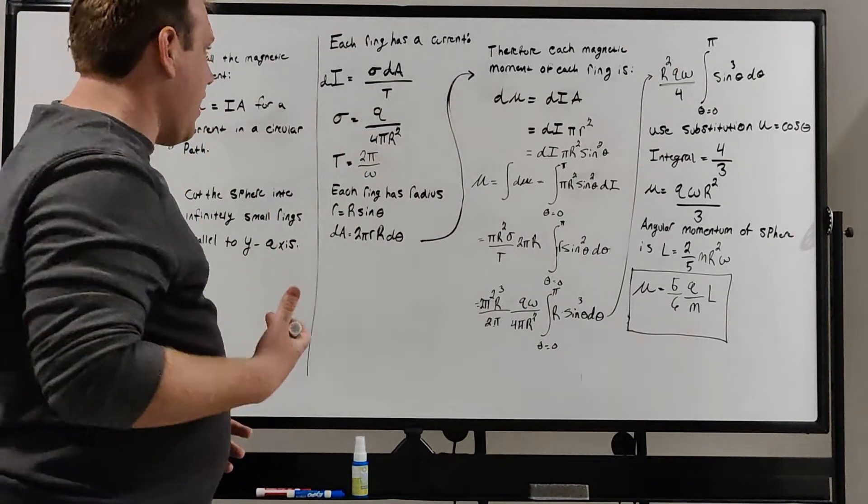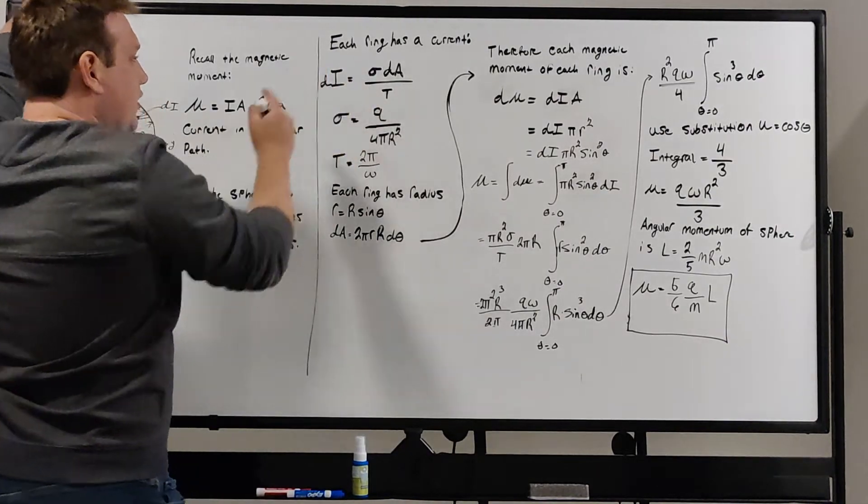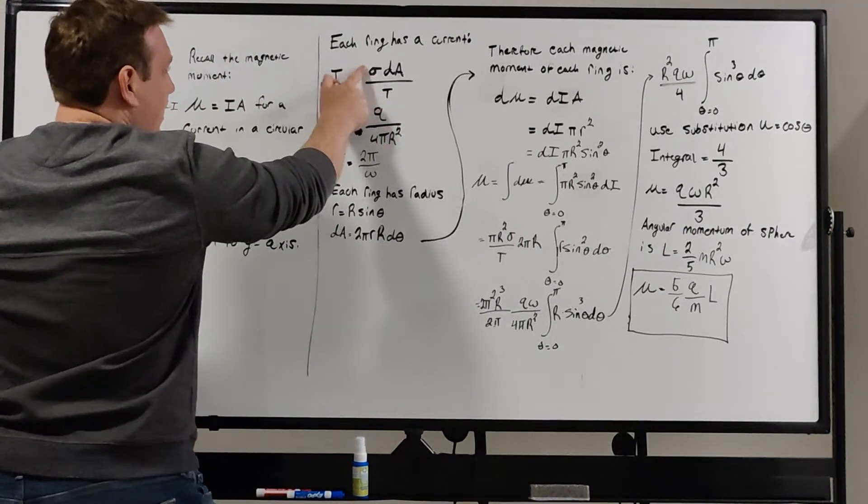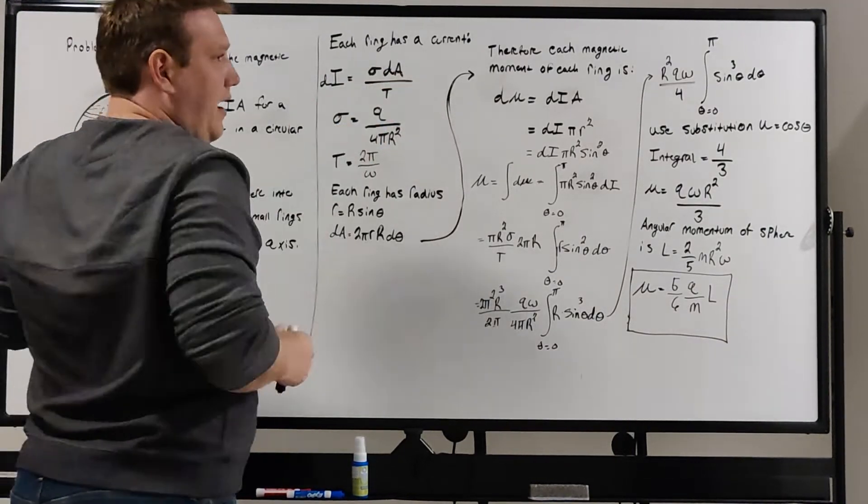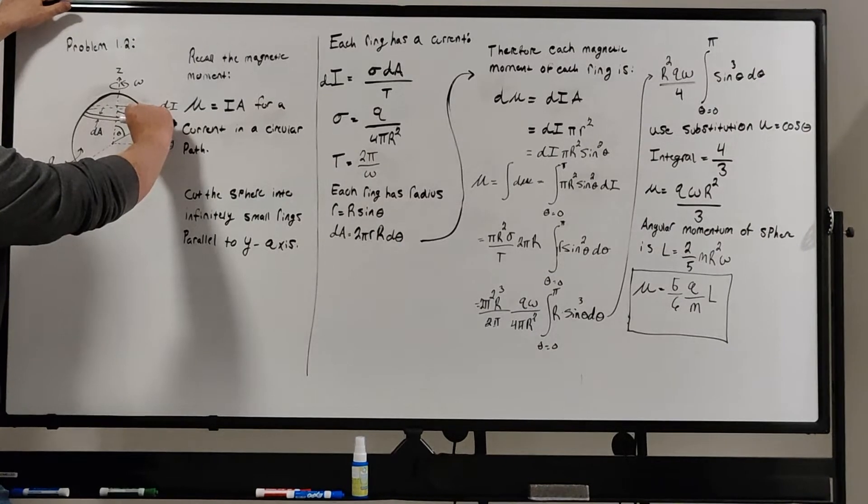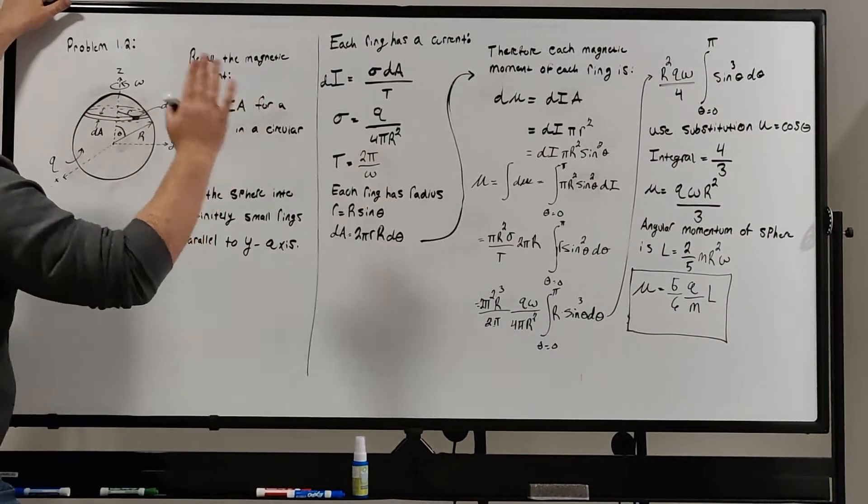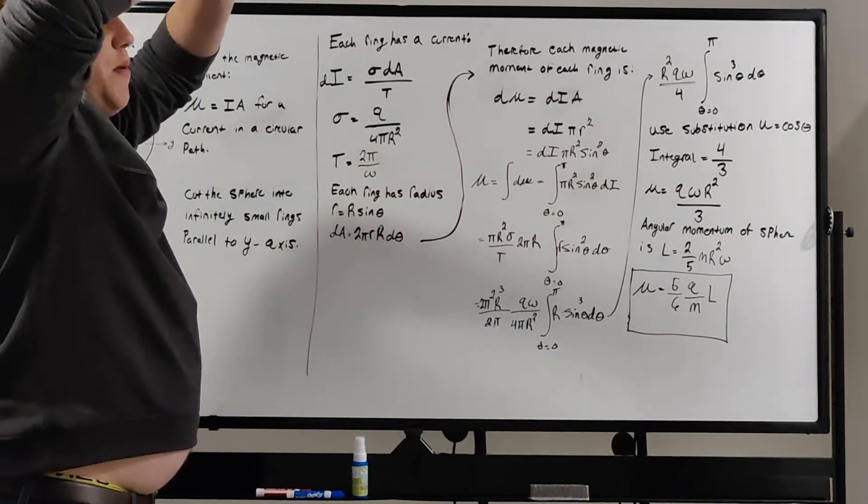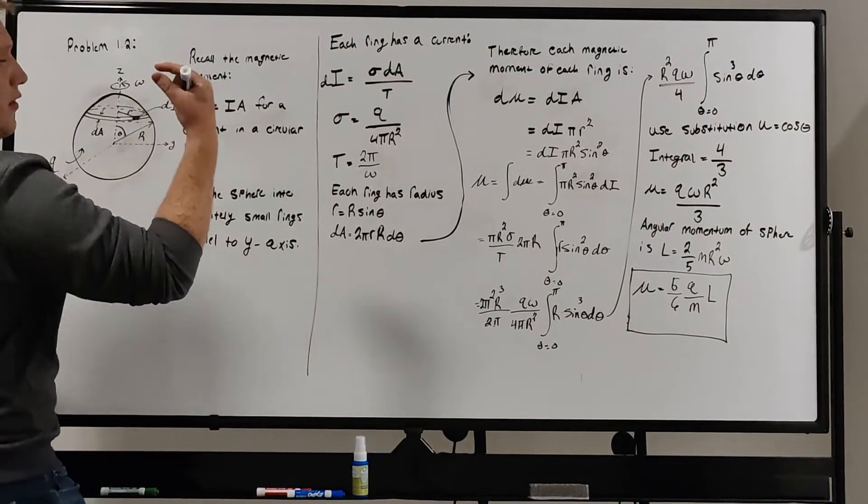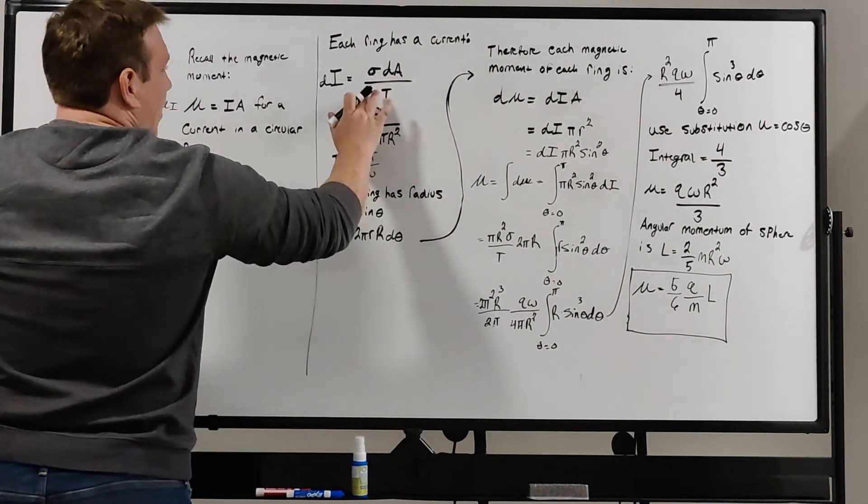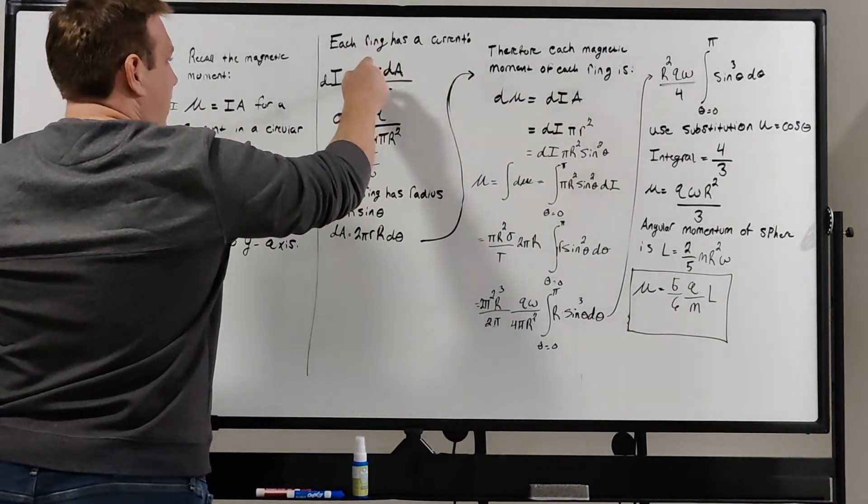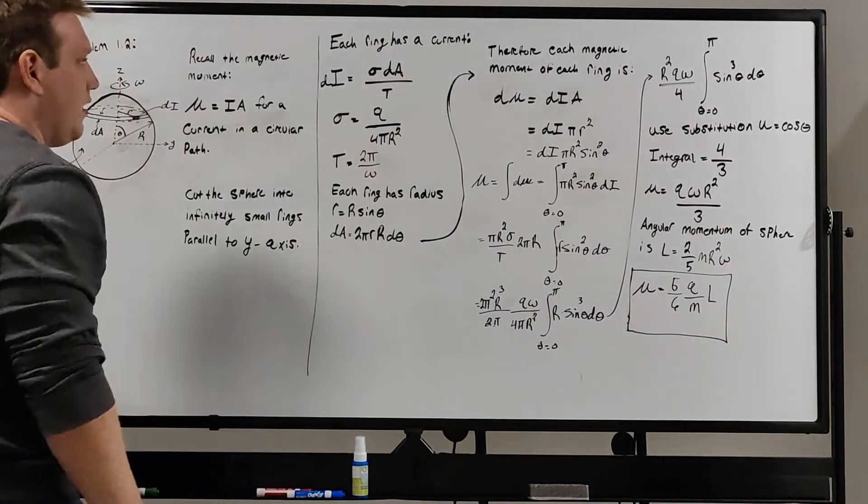We can figure that current out by saying current is charge per time. If we think about the sphere having a uniform charge density sigma, which is the charge per unit area, then we multiply that by dA, which is the infinitesimal width here that makes up that charge along the outer surface of the sphere, because the charge is smothered on the outside of the sphere, not on the inside of the sphere, even though it's solid. We divide that by t, which is the period of rotation. That gives us charge per unit area times area, which is a charge per unit time.